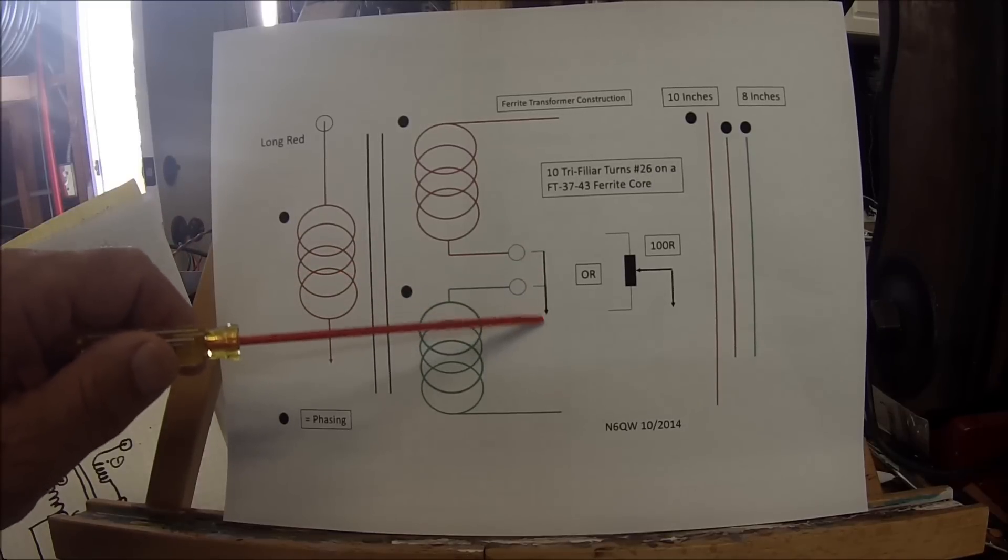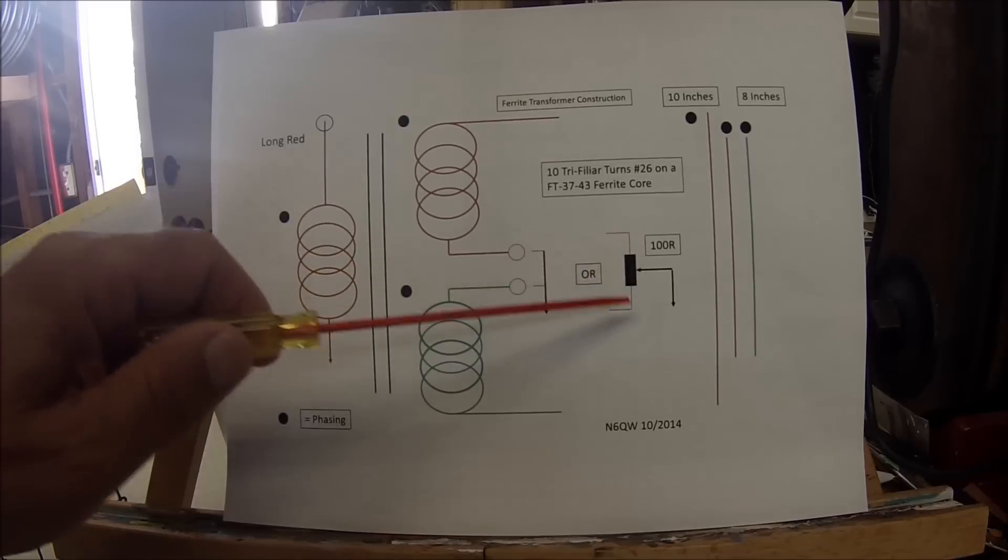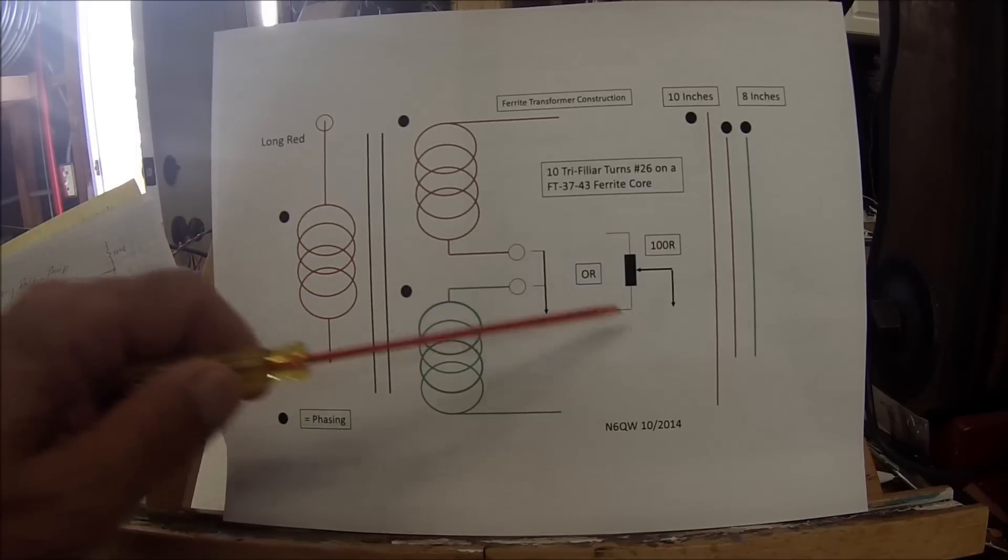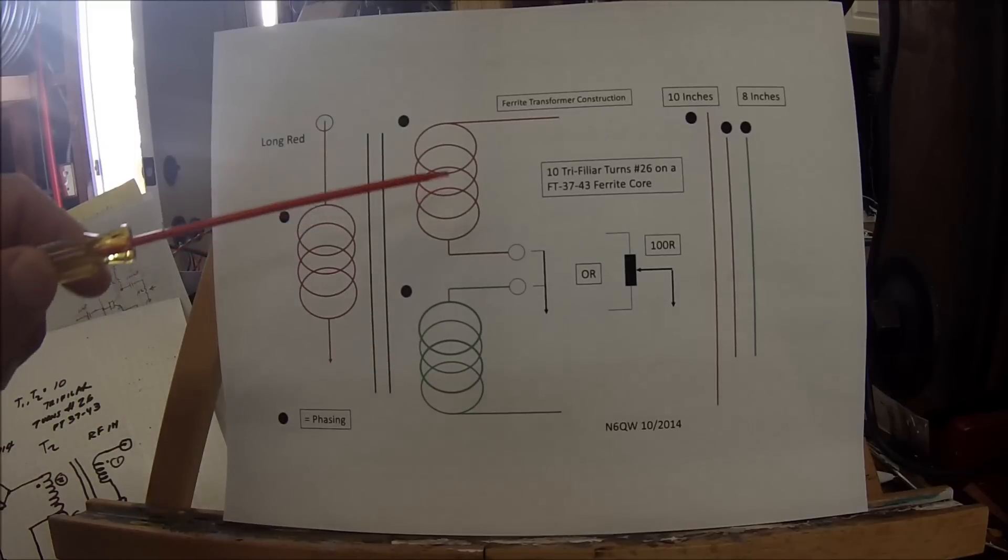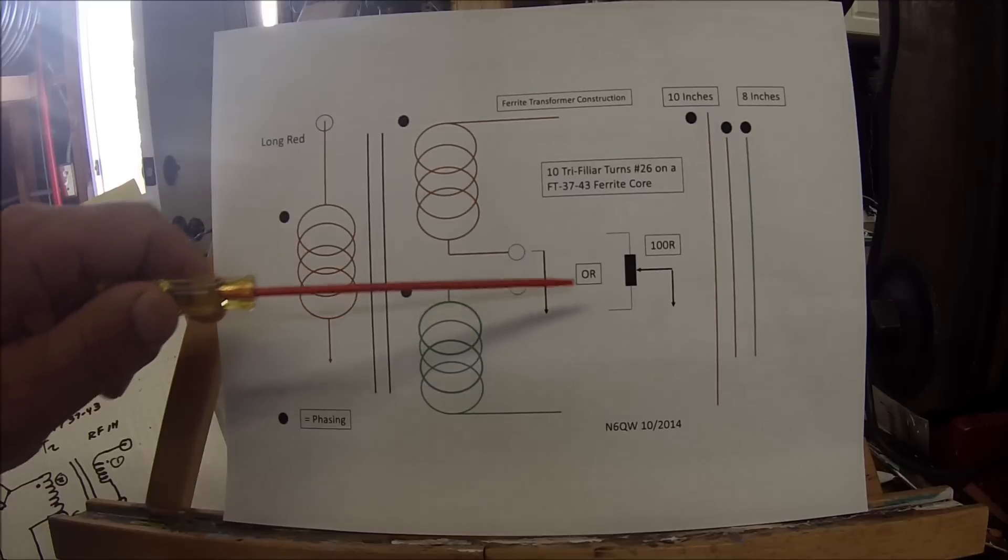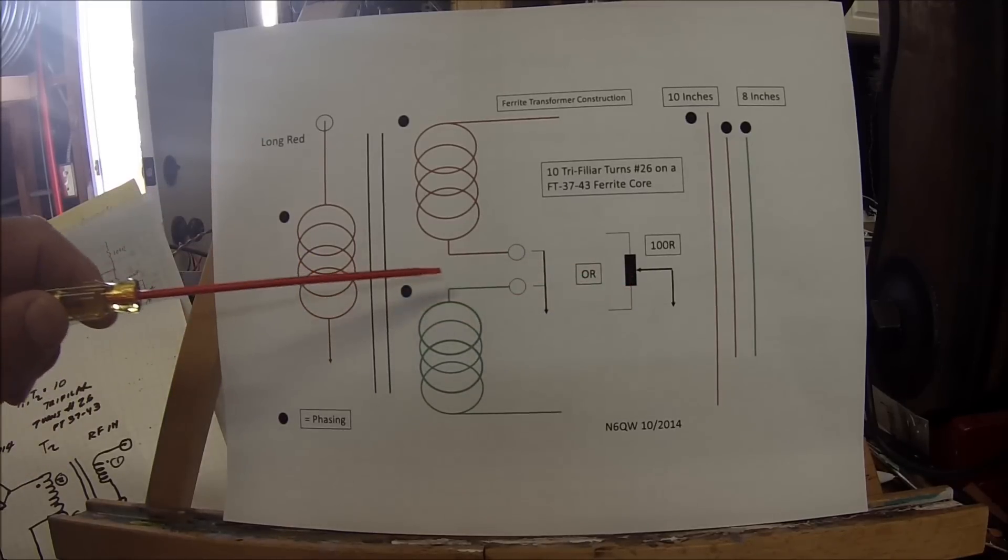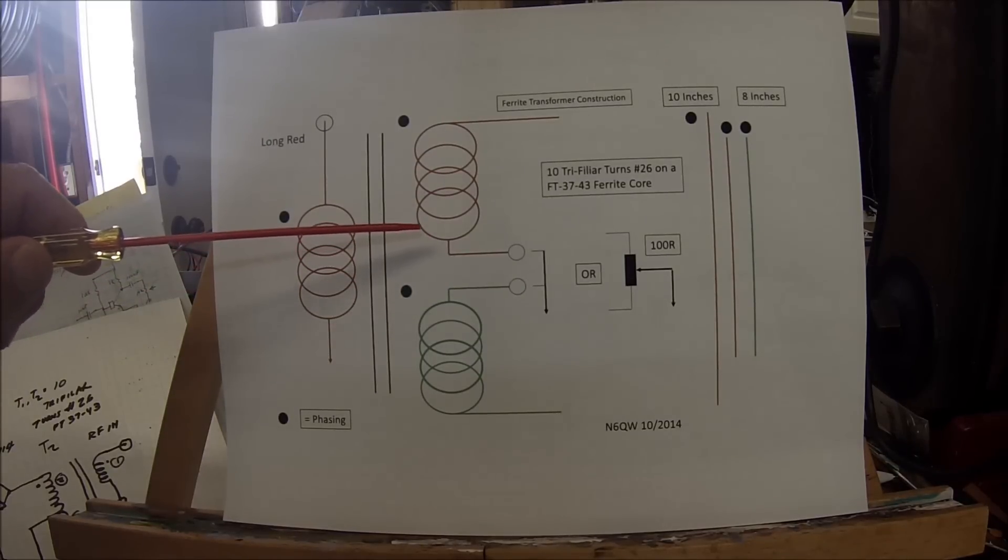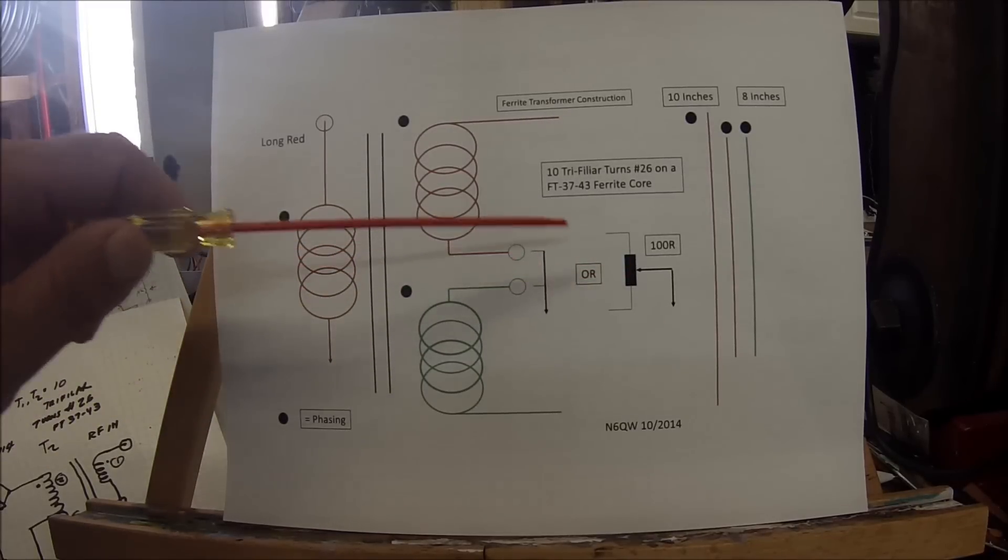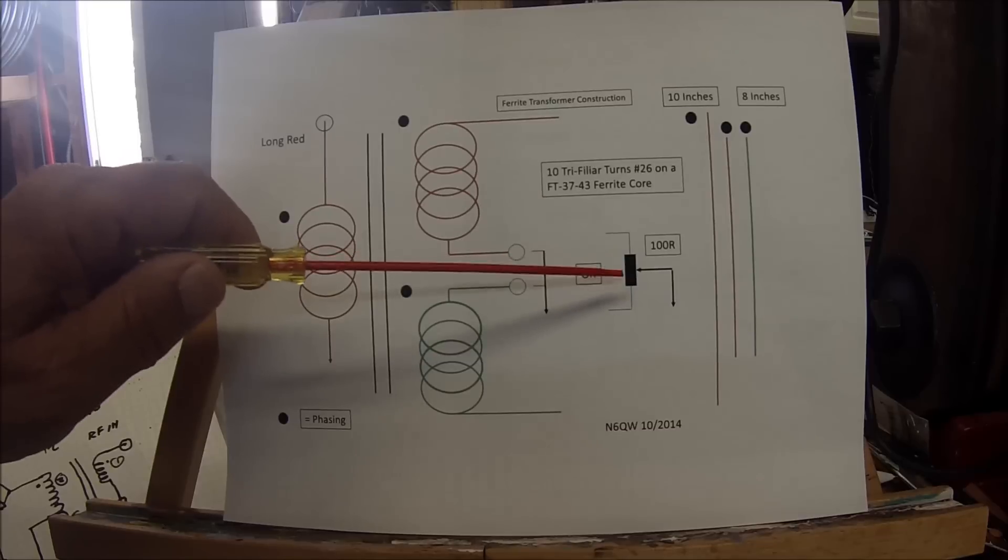You can connect a 100 ohm pot - this end goes here, this end goes here, and the center wiper goes to ground. This enables you to do a little finer balance by adjusting the variability between the two windings. For a commercially made double balanced mixer, manufacturing specifications are pretty exacting. When homebrewing, they may not be as exacting, so having this balance pot can make up for some of the difference.